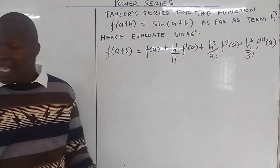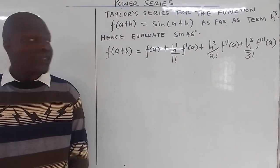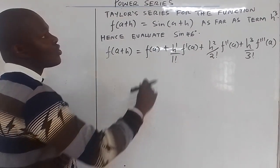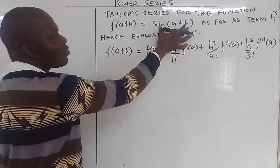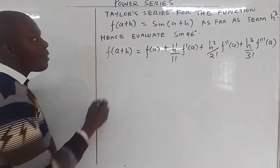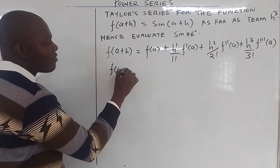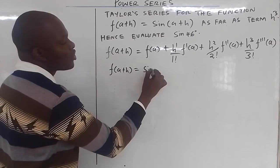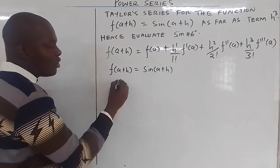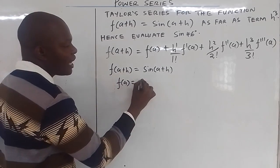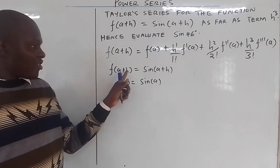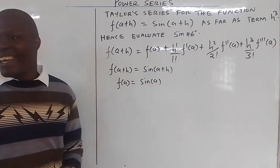Those are just the freedoms of the Taylor series formula. So your f(a+h) is sin(a+h). When h is 0, then f(a) = sin(a). When h is not there, f(a) = sin(a).